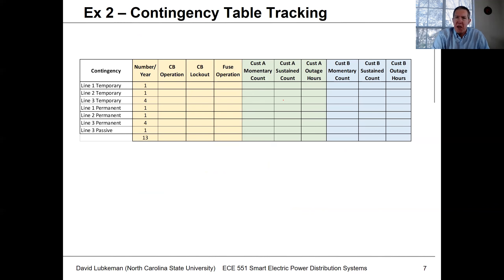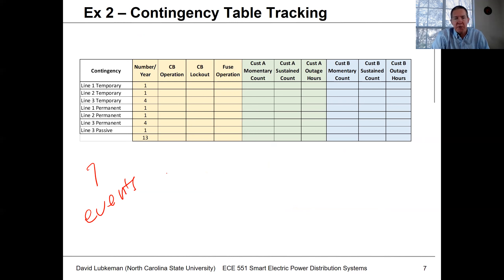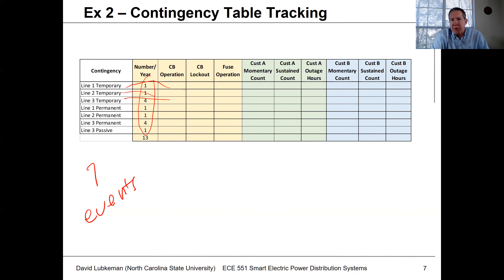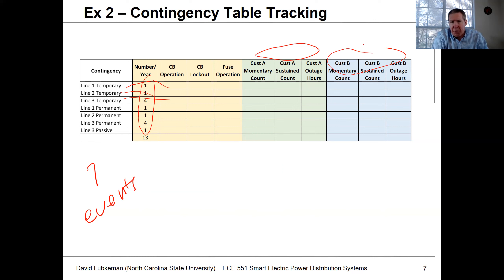I like putting all this information into a table to help with the bookkeeping. There are seven different types of events that could occur for these three line segments. For each event, I enter the number of occurrences per year and fill out the table regarding how many times the circuit breaker operates, whether it locks out, whether there's a fuse operation, and track the customer impact counts for customers A and B. For a practical circuit with maybe 500 customer locations, this has to be all computer code.